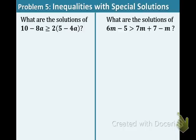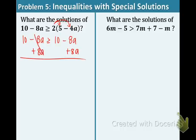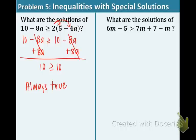In part A, we have this inequality. As you can see, we want to distribute the 2. The left side stays the same. Now let's add 8a to both sides — the variables cancel out, which means a special case is going on. Now we have 10 is greater than or equal to 10. This is always going to be true because of that line underneath the symbol — the greater than or equal to. 10 is always going to be equal to itself. So it's always true, and that means the solutions are all real numbers.